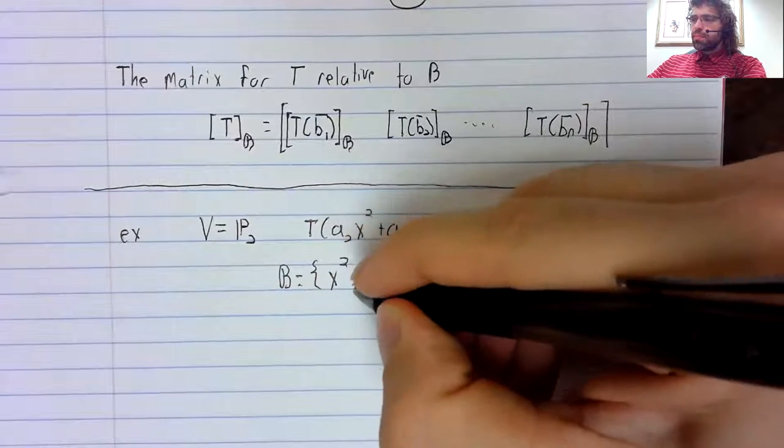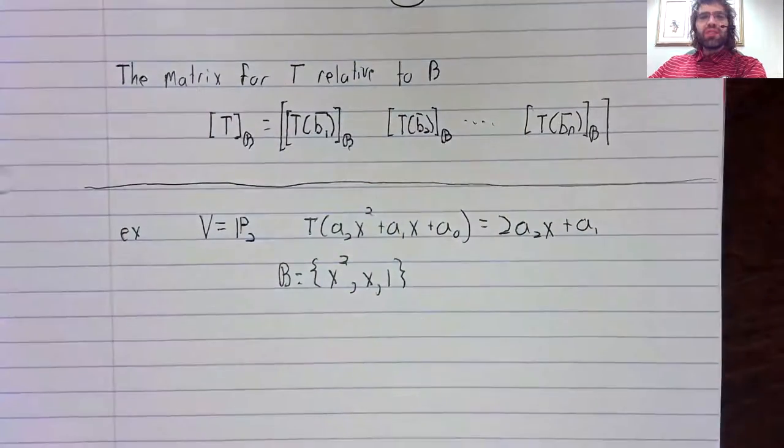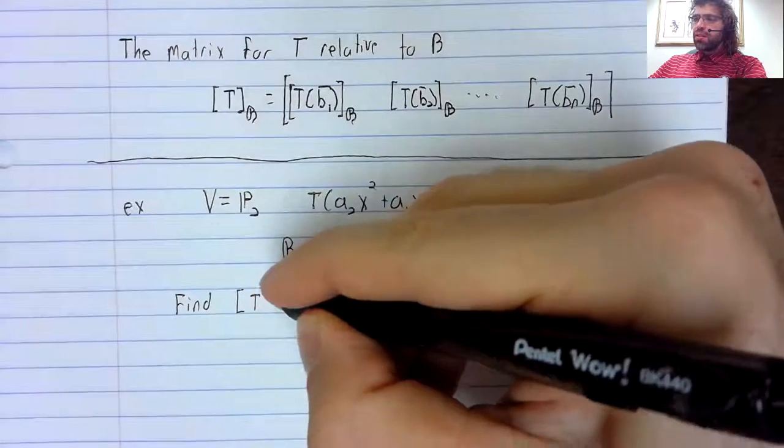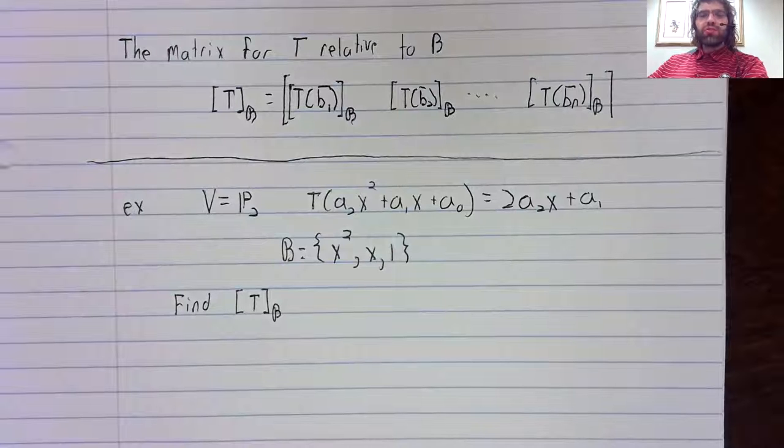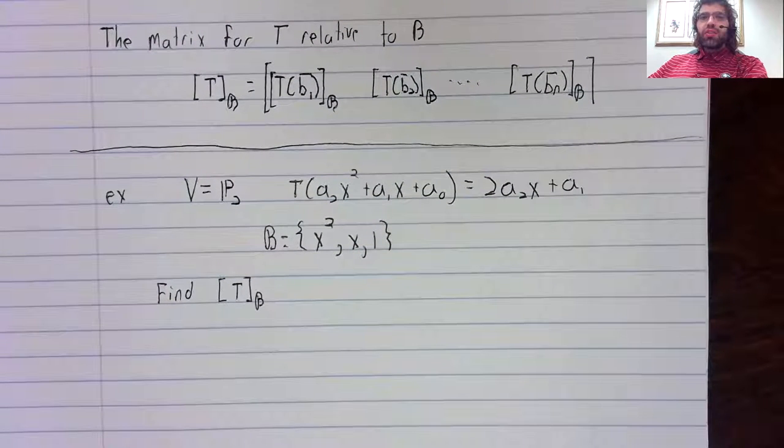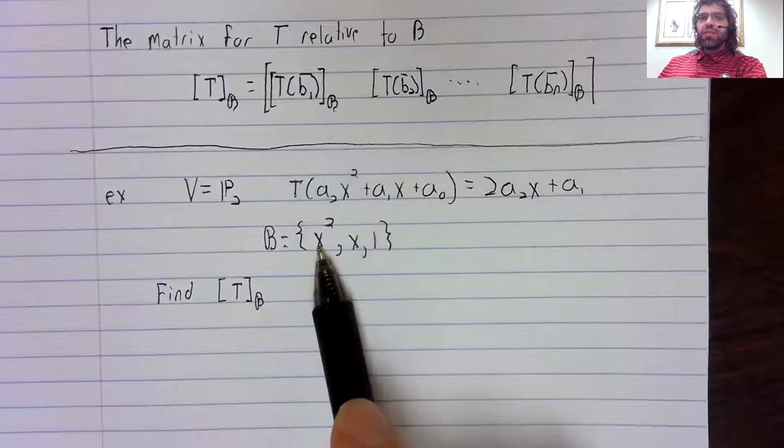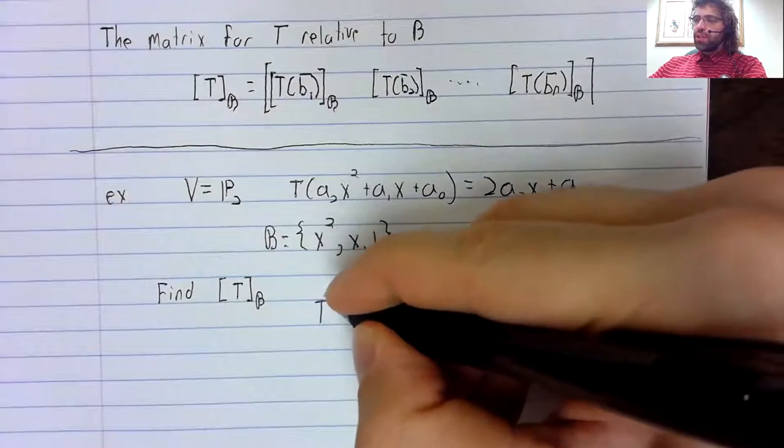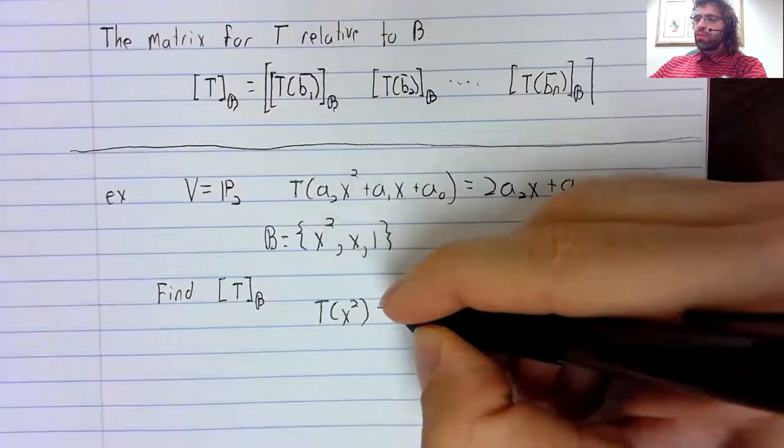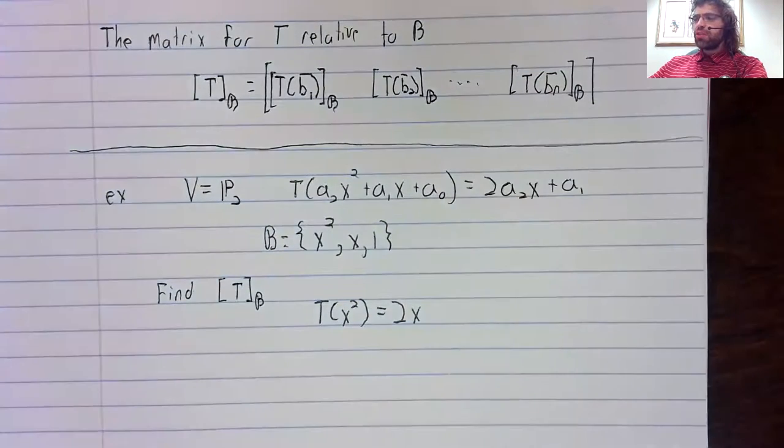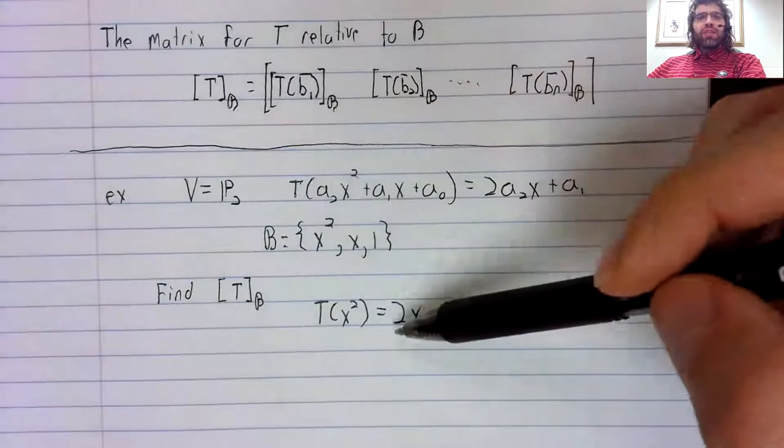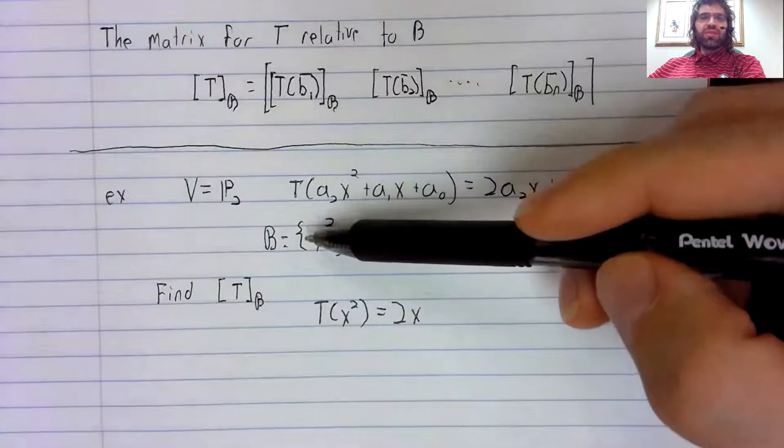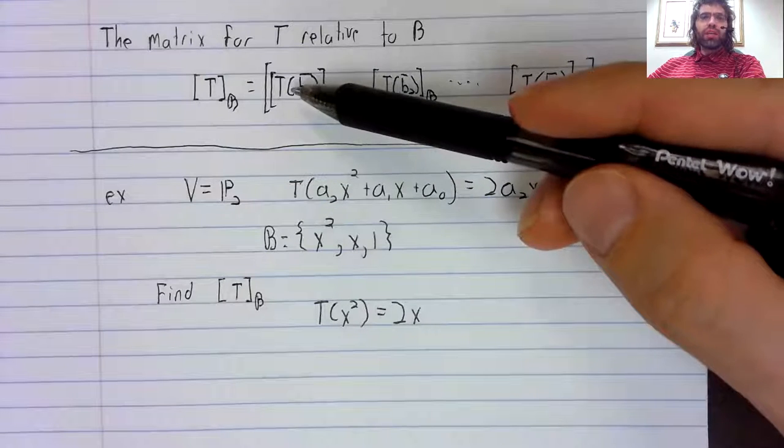We'll let this be the basis we look at, and let's find this matrix. So there are a few things we need to do here. We need to take each of these basis vectors and apply this transformation to it. We'll start with x squared. T of x squared is two x. And now we need to take this vector and write it in terms of these basis vectors so that we can get the coordinate vector.